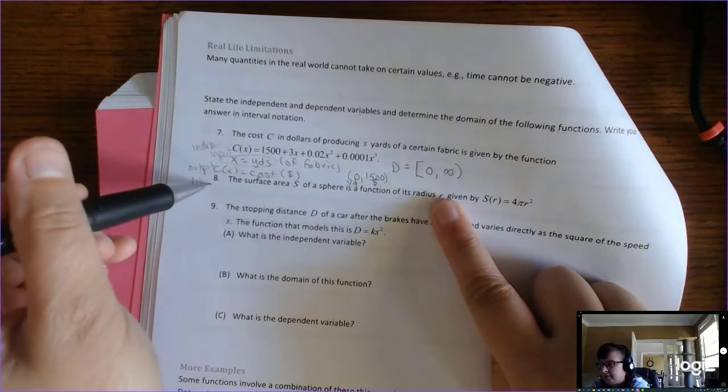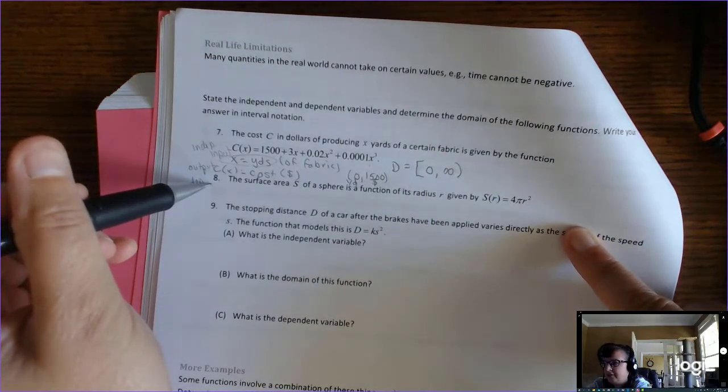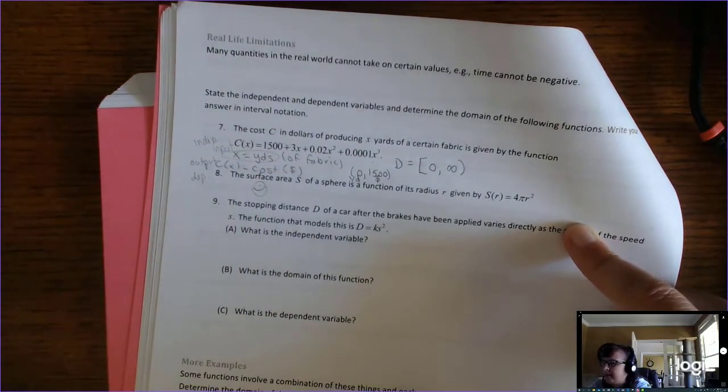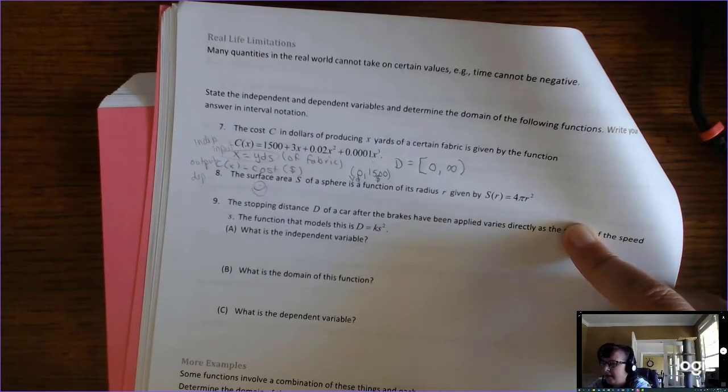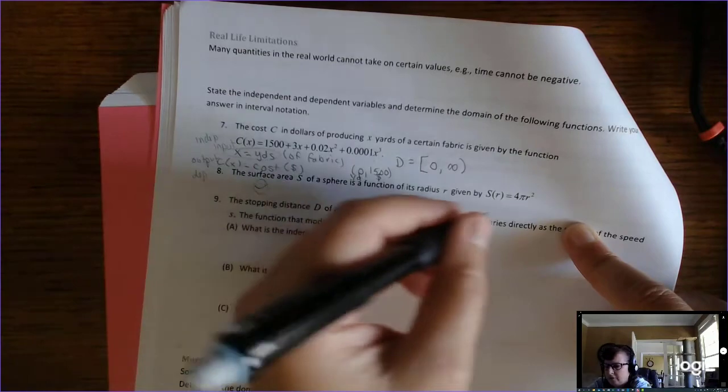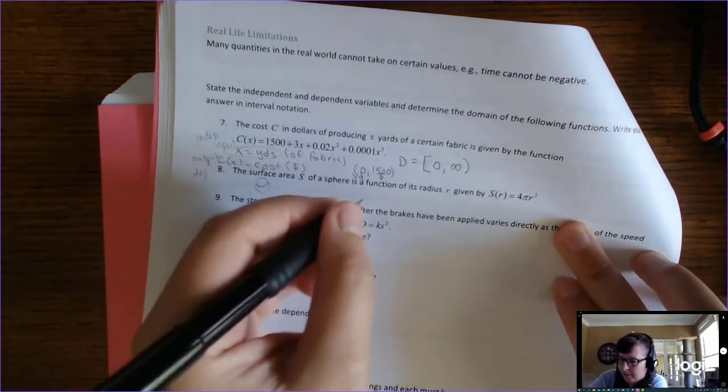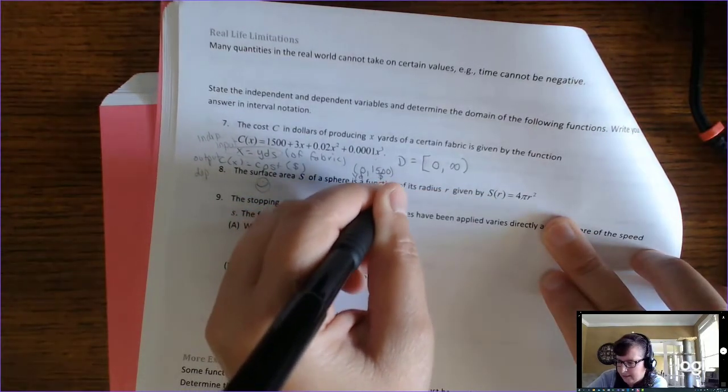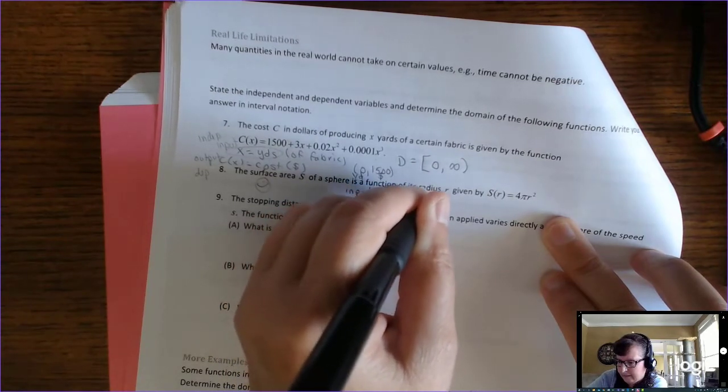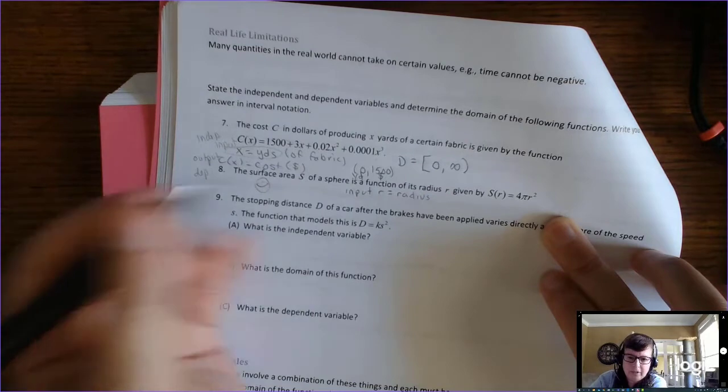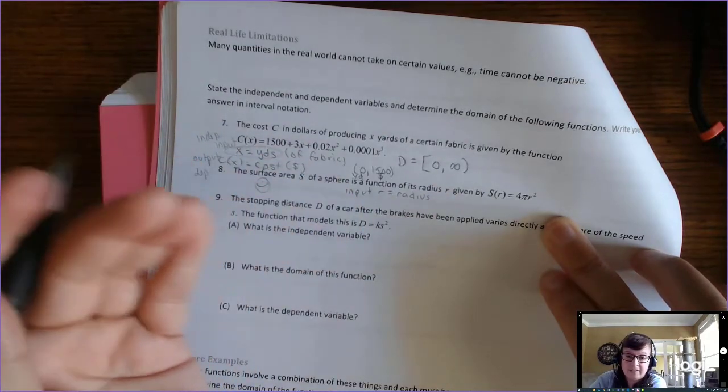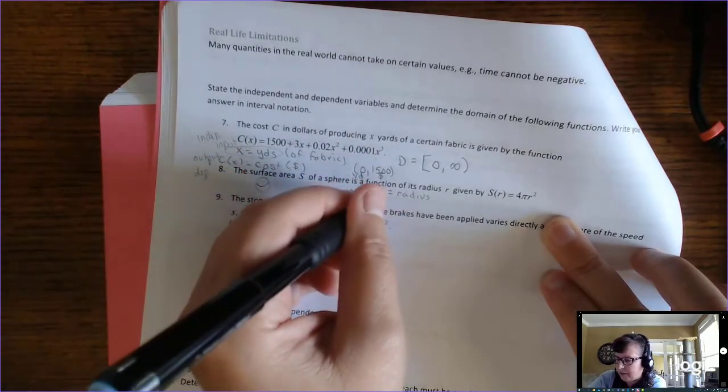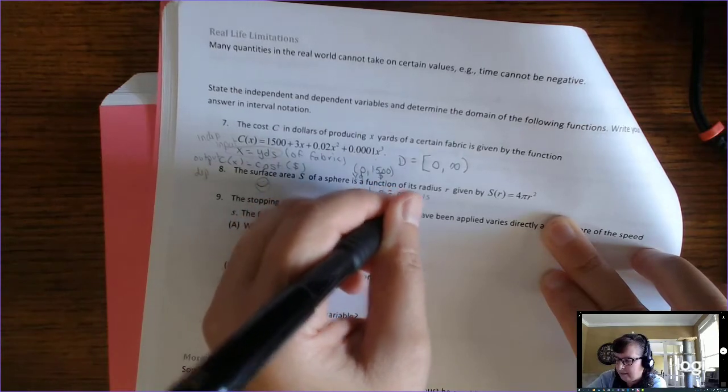Okay. Let's look at the second one. It says the surface area, S of a sphere, okay, so a sphere like a basketball, is a function of its radius r given by S of r equals 4 pi r squared. So, this is function notation. It's supposed to help you with your Math English Dictionary. R is my input because it's inside the parentheses and it stands for radius. We're not told the units, but it could be anything, meters, centimeters, inches. And my output is the surface area of the sphere.